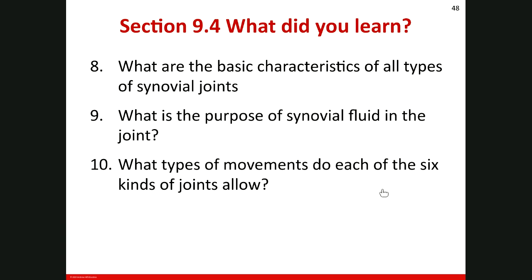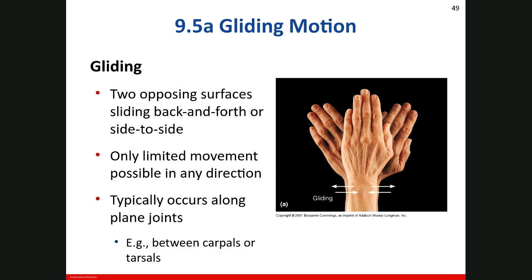Four types of motions occur at synovial joints: gliding, angular, rotational, and special movements. Gliding is a simple movement in which two opposing surfaces slide slightly back and forth or side to side with respect to one another. In gliding motion, the angle between bones does not change and only limited movement is possible. Gliding motion typically occurs along plane joints, such as between the carpal or tarsal bones.